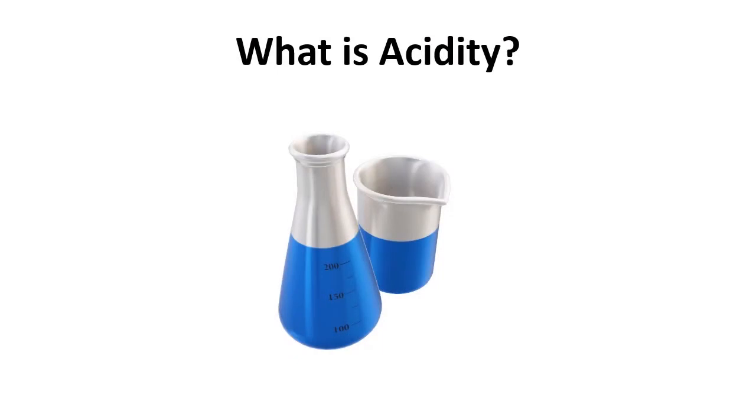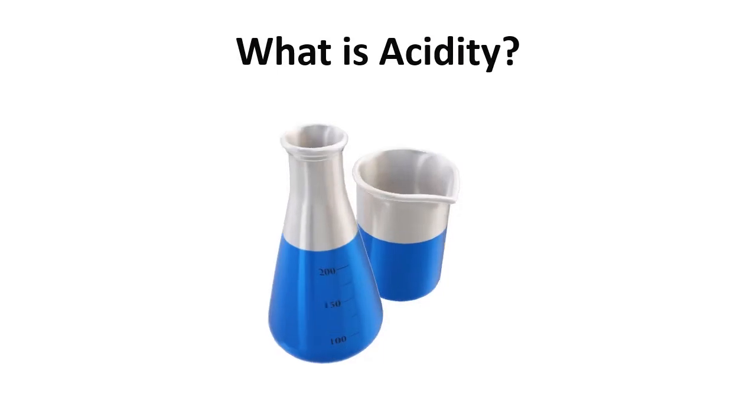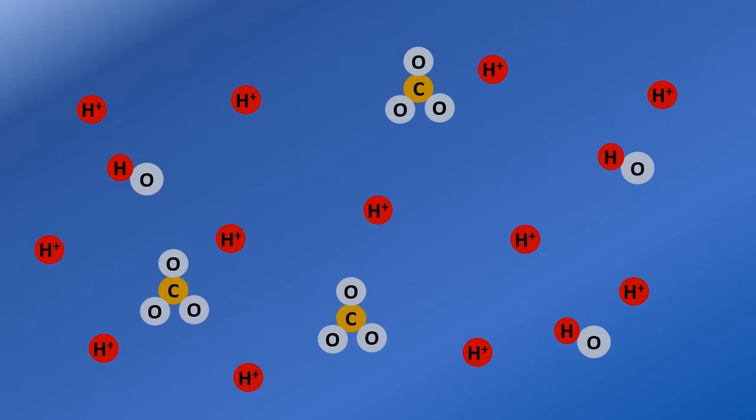Before we begin, let's quickly talk about acidity and why it's a problem for our oceans. When we say something is acidic, what we mean is that there are a relatively large amount of hydrogen ions. So the more free hydrogen ions there are, the more acidic we'd say something is. These hydrogen ions are pretty reactive, which means they freely interact with other molecules very easily.